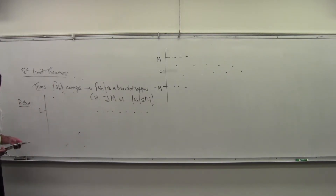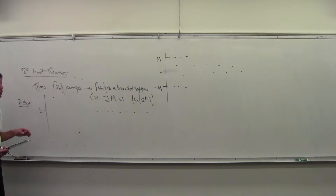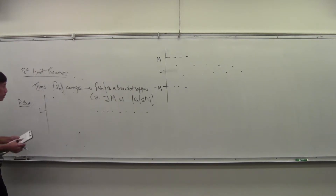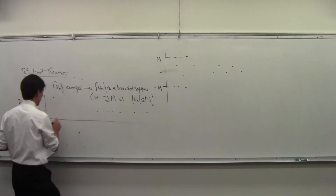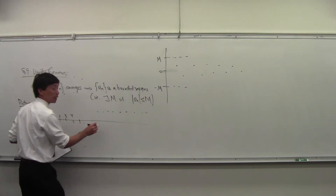[Student: Don't n have to be integers? You can't plug in a real into...] That's true. So on the x-axis, all the elements are going to be at a certain integer n. So you've got your times: time 1, time 2, time 3, time 4, etc.